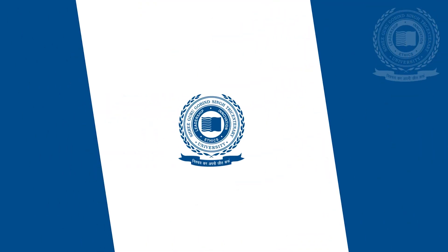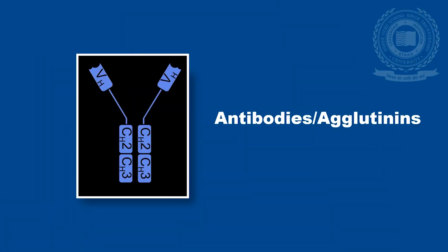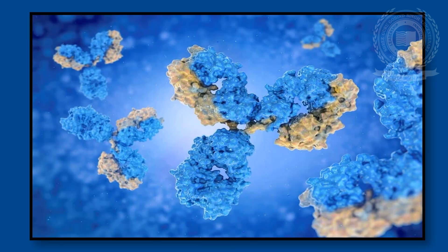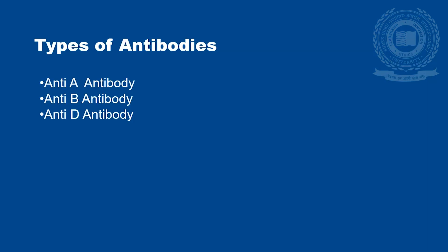Coming to the topic of antibodies. They are also called as agglutinins. These are the substances present in blood that cause particles to coagulate and aggregate, changing the fluid-like state of blood to a thickened mass in solid state. This is how the antibodies look like under the electron microscope. The different types of antibodies present in plasma are anti-A antibody, anti-B antibody, and anti-D antibody.